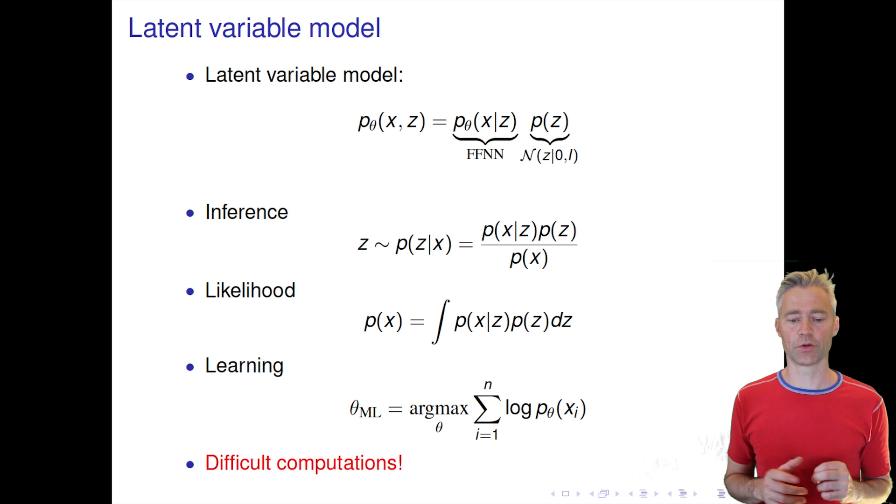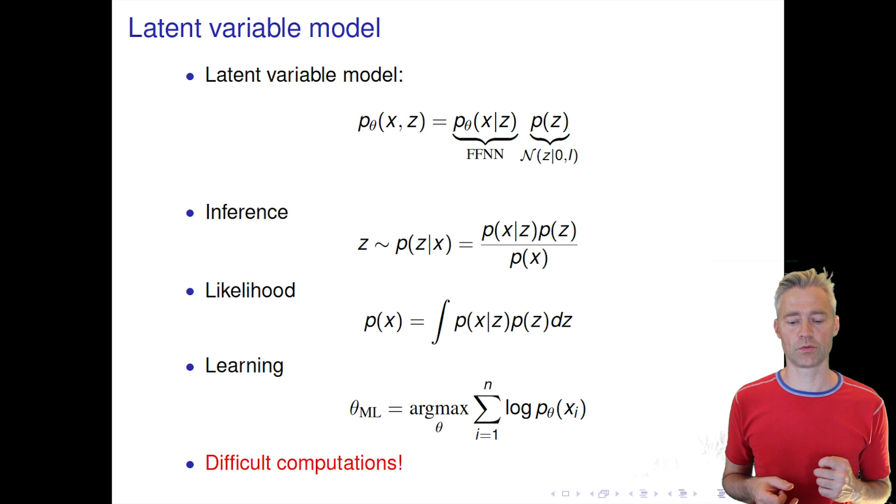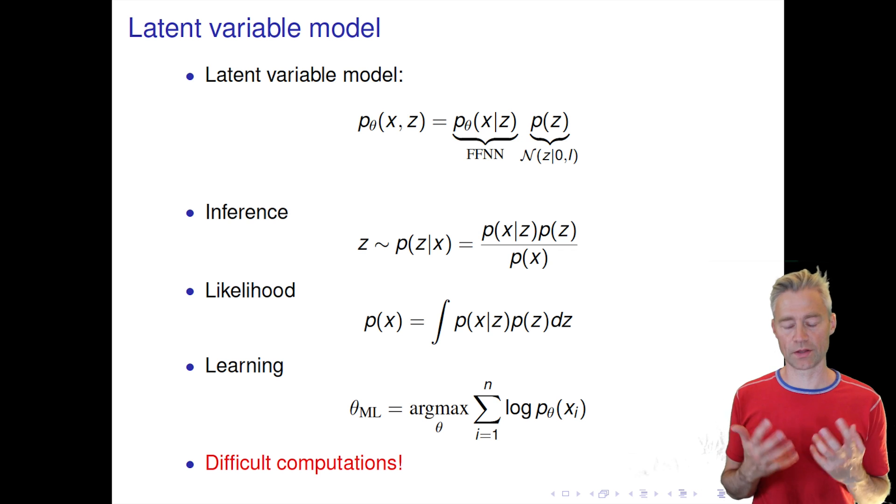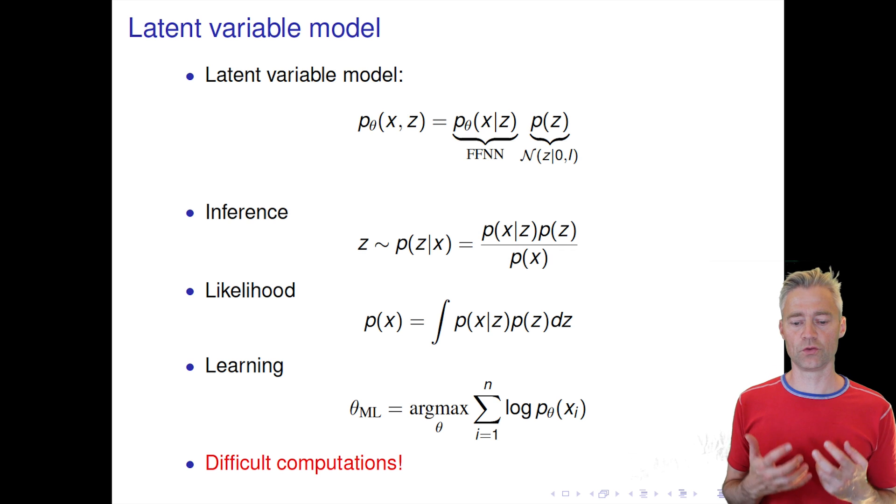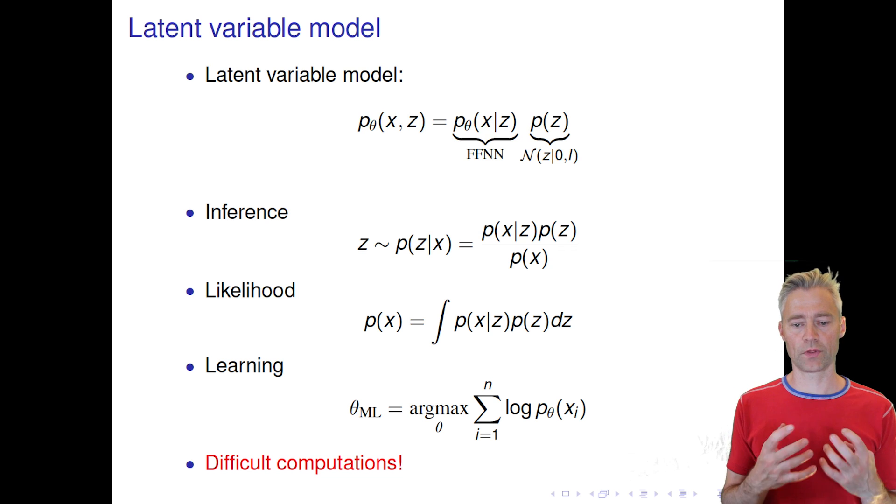Learning is also complicated because it uses the likelihood from each example. So if we want to find the maximum likelihood estimate, then we actually have to maximize this likelihood where we have the log probability for each example. So all these are difficult computations. And the big breakthrough recently for these types of models is that it had been realized that we can use variational inference and deep learning models.